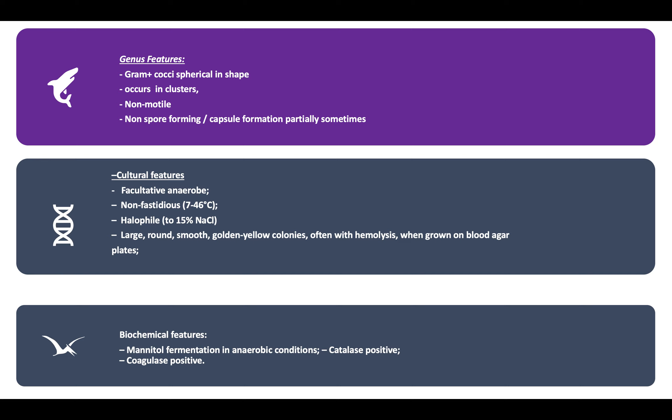When you do a gram staining, they come out gram-positive. Under a microscope they appear as cocci in a spherical shape, usually non-motile and non-spore forming, but rarely can form capsules. They're facultative anaerobes, so growing them in strictly aerobic conditions would return a negative result. On blood agar, they grow with golden yellow colonies, often with hemolysis.